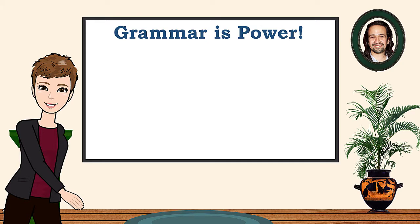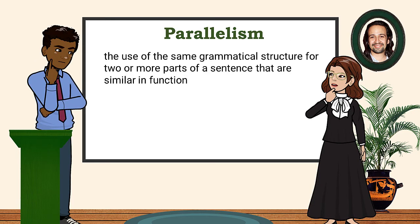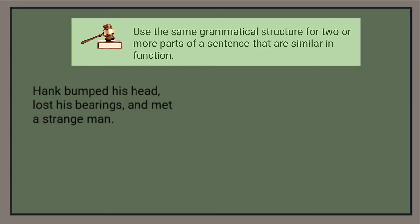Welcome to another episode of Grammar is Power. In this video, we'll study parallelism. Let's jump right in. It's not often the case that the definition of a term is essentially the rule. Parallelism is the use of the same grammatical structure for two or more parts of a sentence that are similar in function. The rule? Use the same grammatical structure for two or more parts of a sentence that are similar in function. In other words, make your sentences parallel.